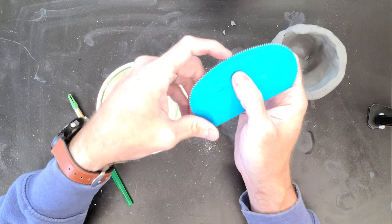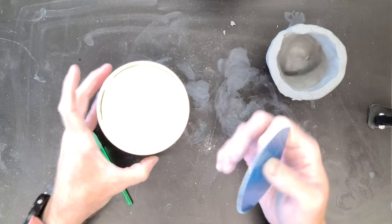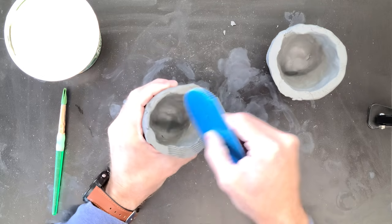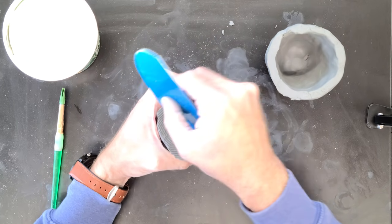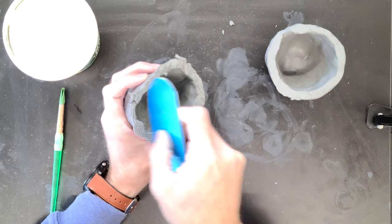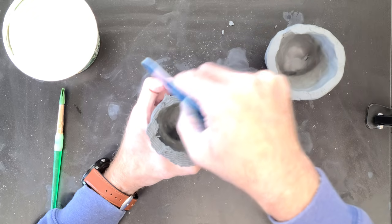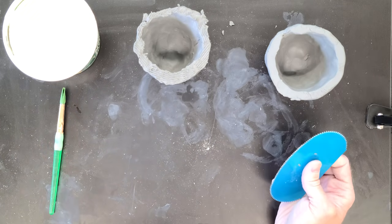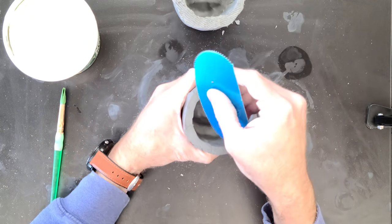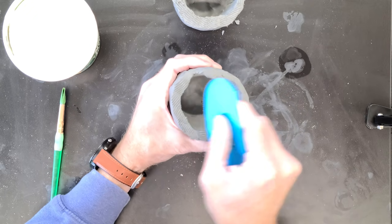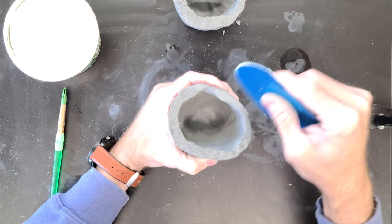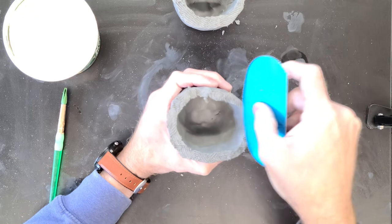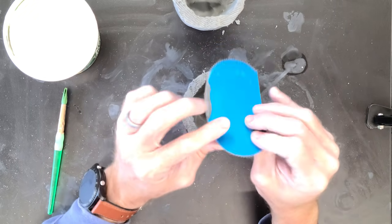I'm just going to take my scoring tool and rough it up one way and then the other way, really rough up that whole bit there. Then I'll do the other one, roughing it up. These tools are great because they'll give you some really good scoring marks, so these pieces will really stick together.